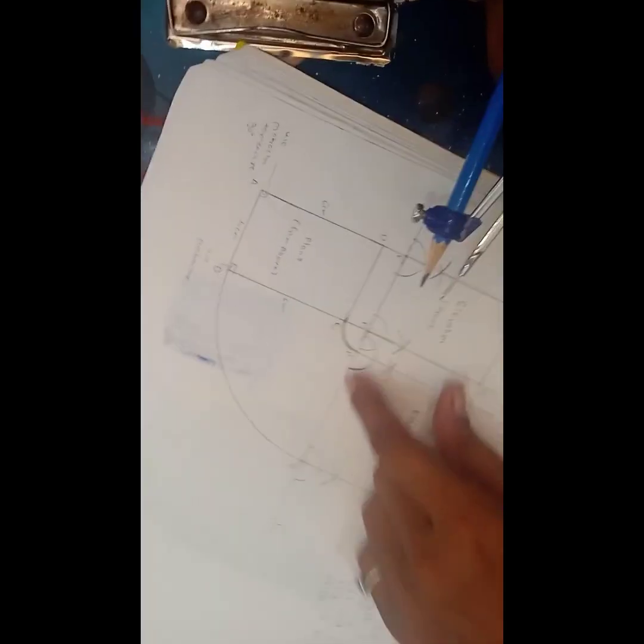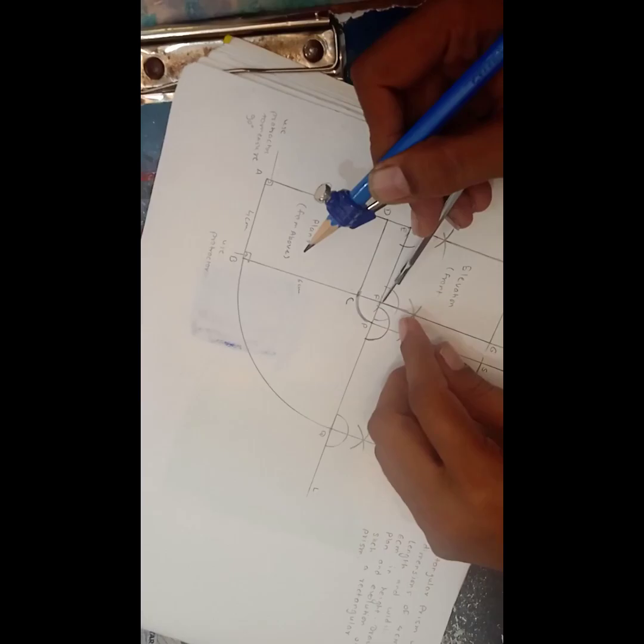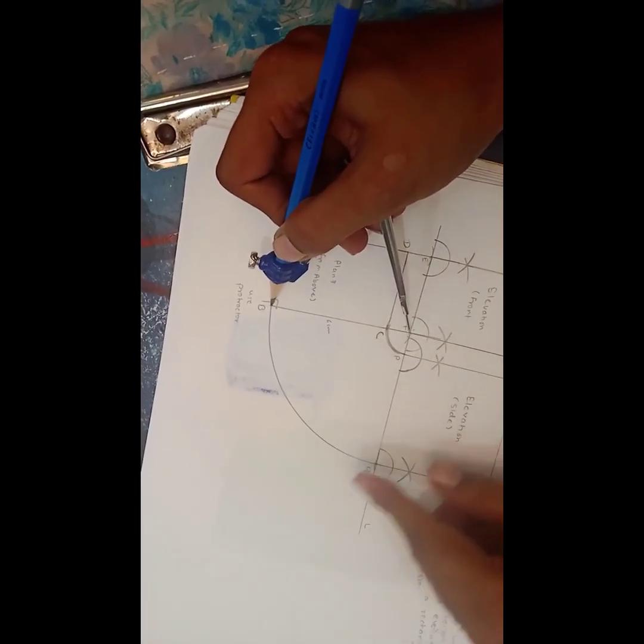So that will be intersect at line L on P. Then afterwards again taking the F, B as a distance in the compass. For that your compass should be fixed and tight. Again hold the another arc.